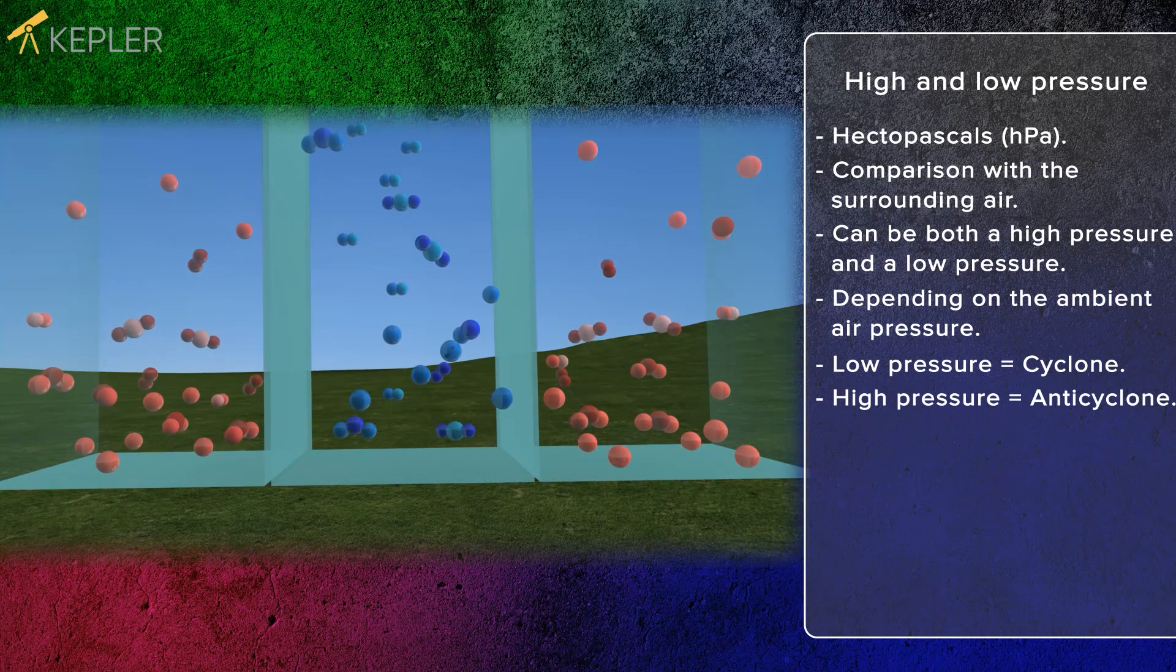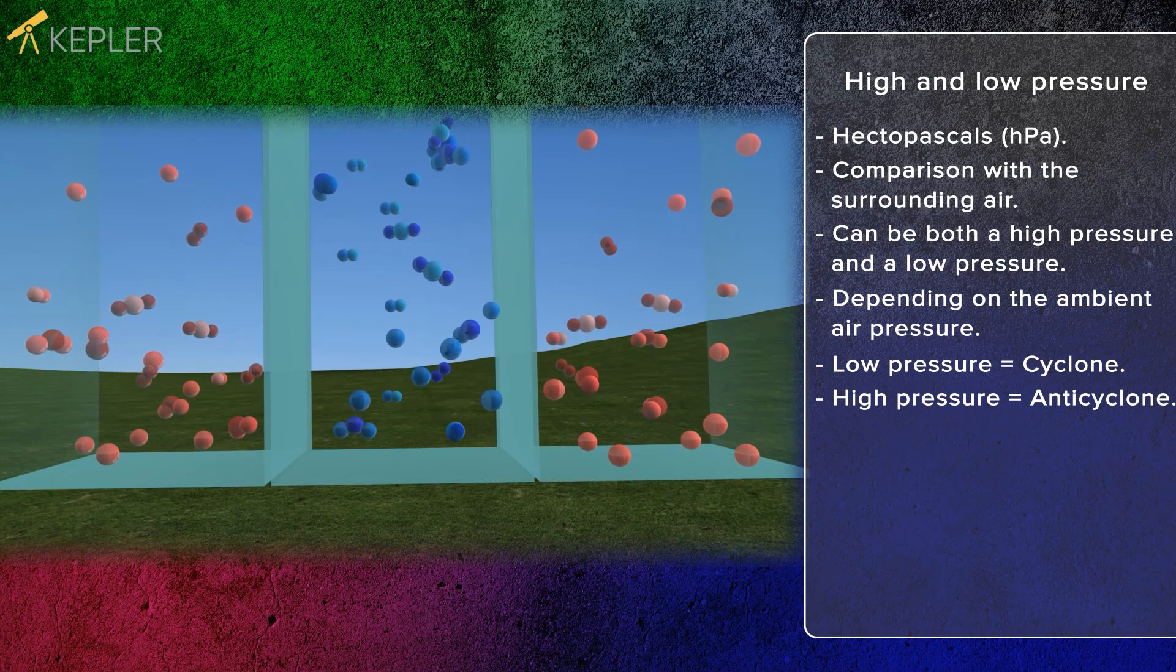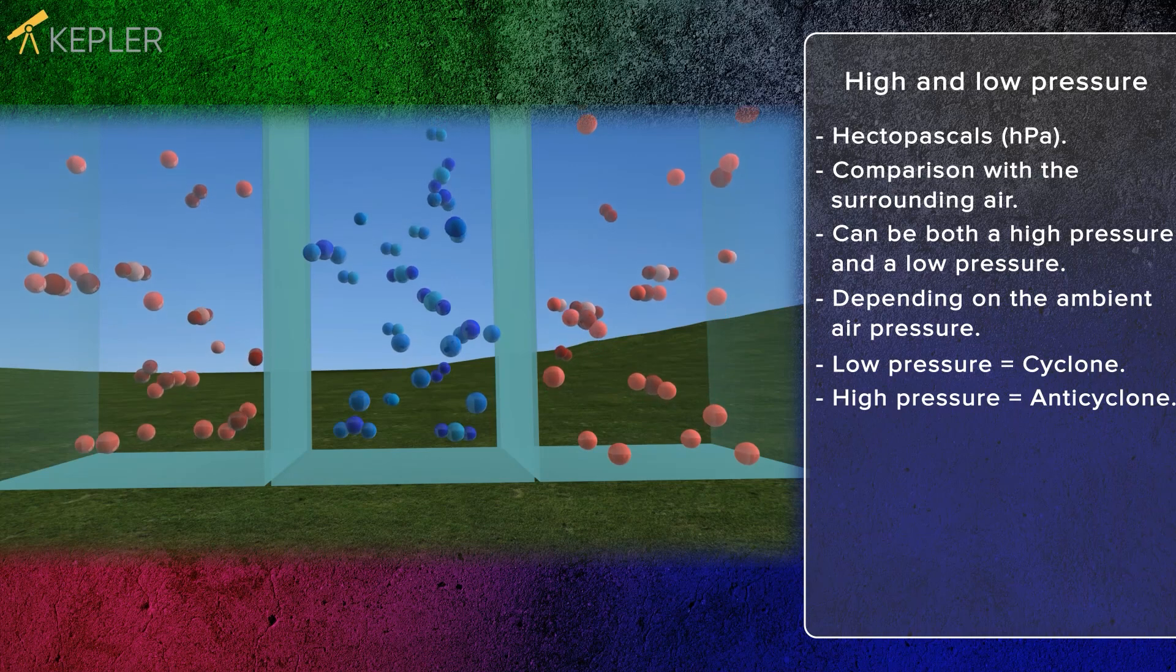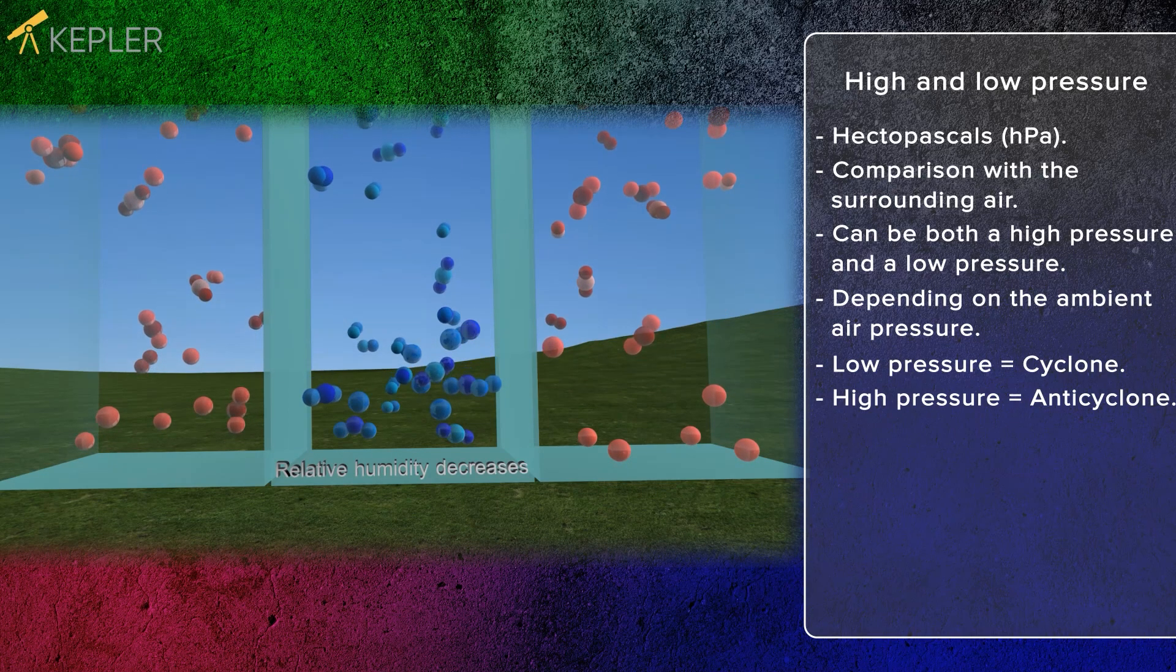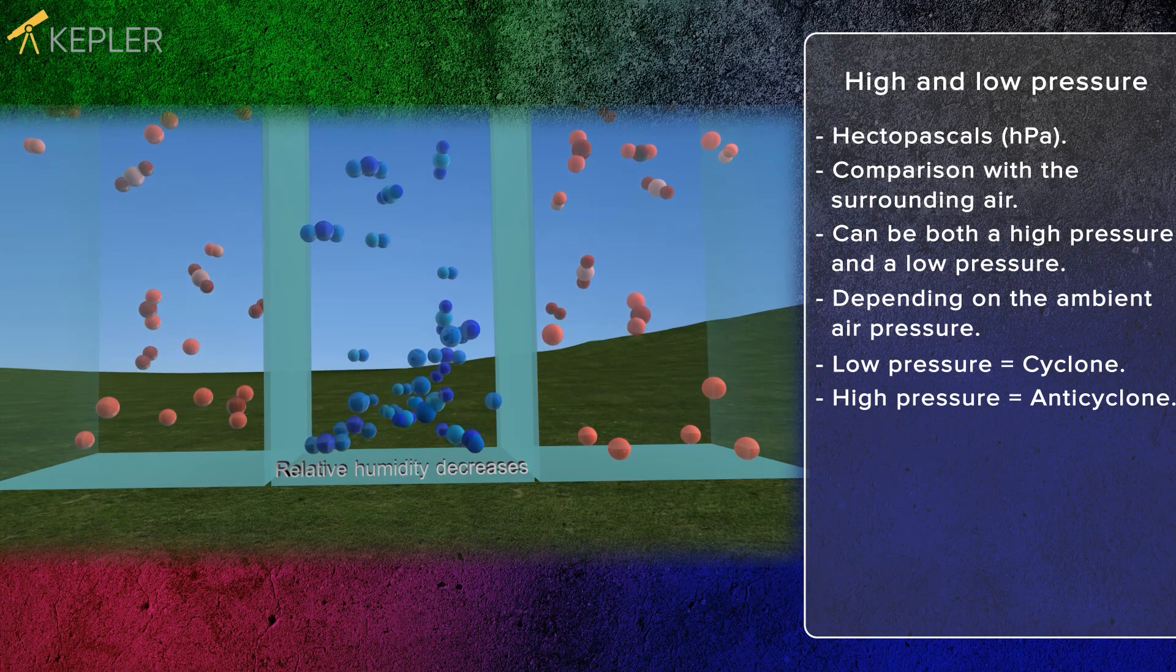Air that is colder than its surroundings sinks as it has a higher density than warm air. As the cold air sinks it heats up and the relative humidity decreases. This causes the clouds to disappear.